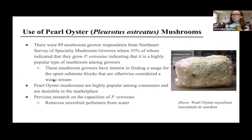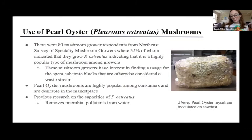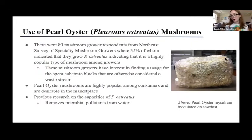For our bioretention basin, we chose to use pearl oyster mushroom mycelium because it is highly popular among mushroom growers in the northeast region. These mushroom growers have a high interest in finding usage for the spent substrate blocks, which are left over after growing mushrooms, because it is otherwise just a waste stream. Previous research on pearl oyster mycelium finds that it's excellent at removing and filtering microbial pollutants, specifically E. coli, from water. This is one of our mycelium blocks — it is pearl oyster mycelium inoculated on sawdust.